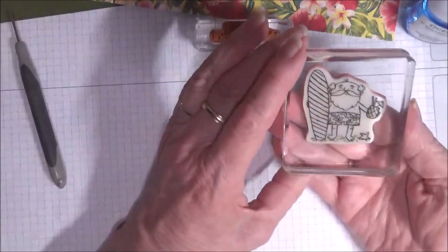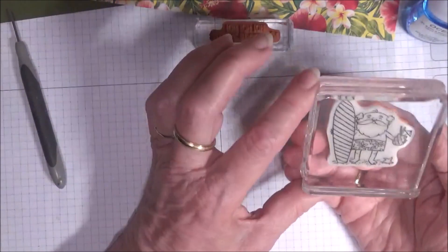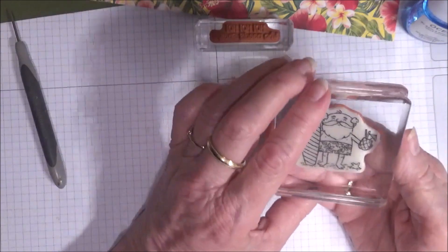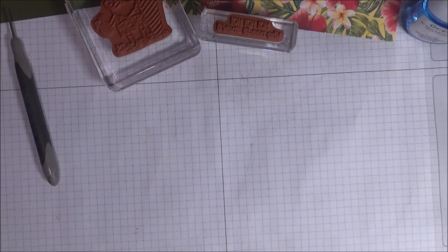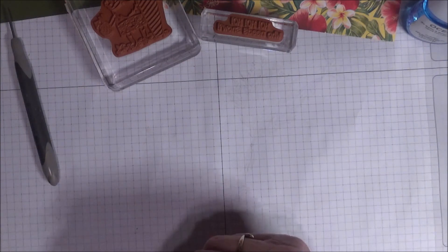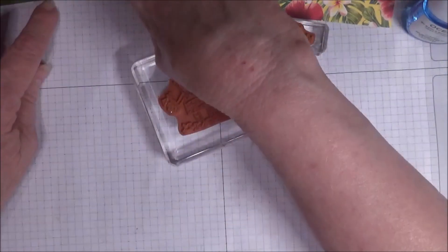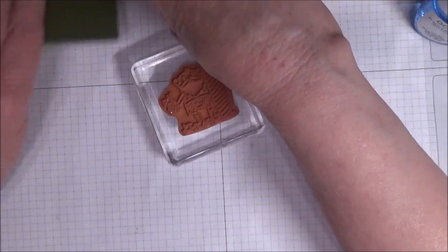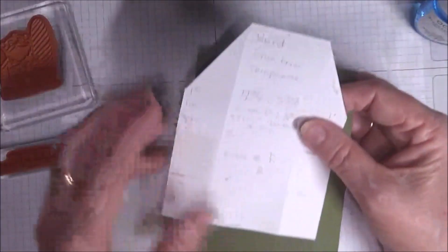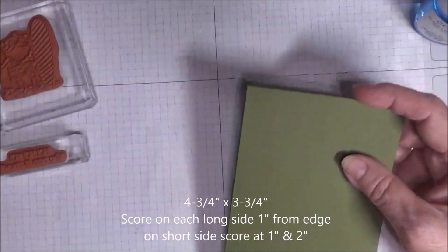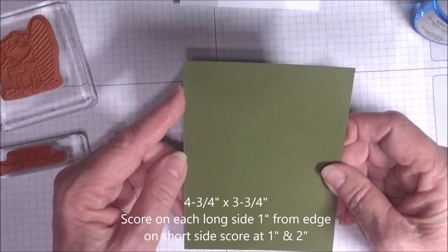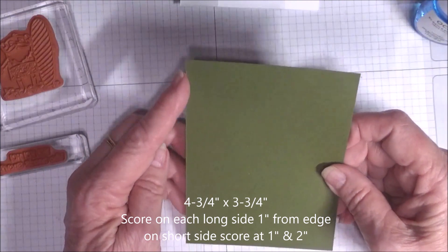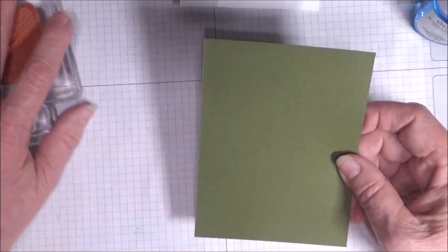Peel off the backing, stick this on here. I'll just take this and peel it off. I'm going to do this Santa with the surfboard. I think he's adorable. And, first of all, I'm going to use a piece of card stock to make our little box.